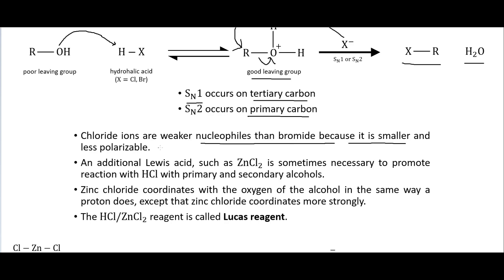Chloride ions are weaker nucleophiles than bromide because chloride is smaller and less polarizable. So for chlorination we often add a Lewis acid — zinc chloride — which is sometimes necessary to promote reaction with HCl for primary and secondary alcohols. Zinc chloride coordinates with the oxygen of the alcohol more strongly than a proton does. This combination of HCl and ZnCl2 is called the Lucas reagent.